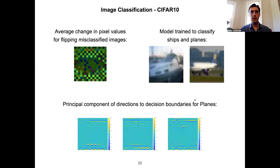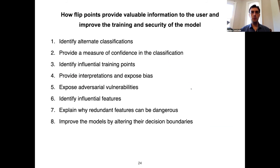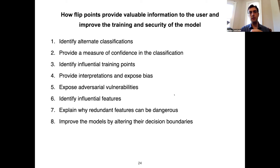As an experiment, these are the principal components that would land images of planes into the ship class for CIFAR-10. There is a longer list in the paper if you find it interesting. This approach can also be used to alter decision boundaries: we can plant points on the decision boundaries of existing models with specific labels in order to move those decision boundaries.